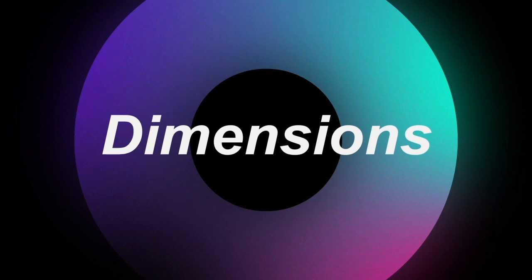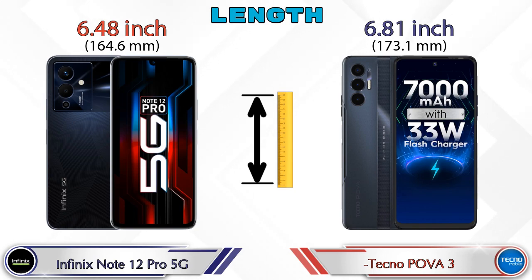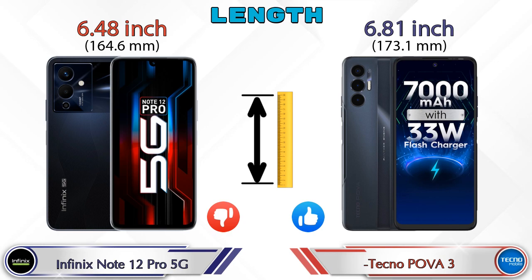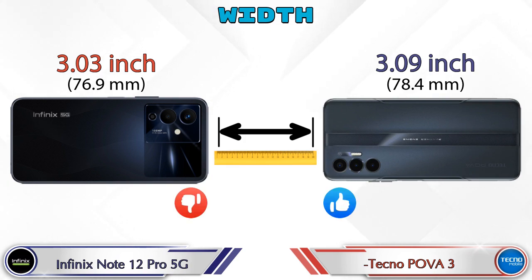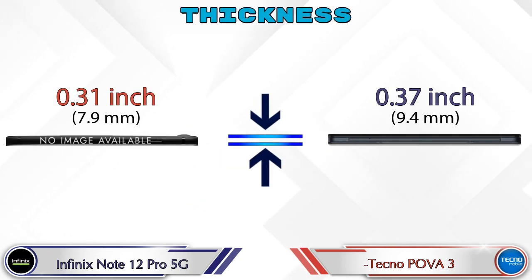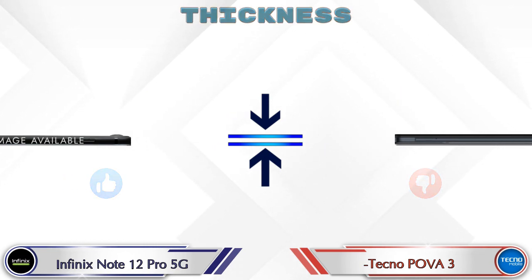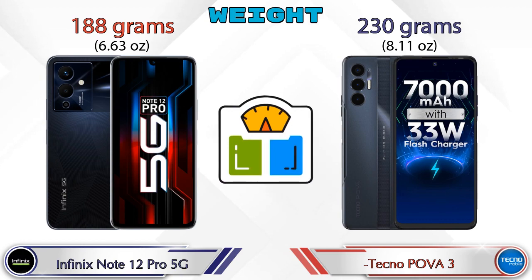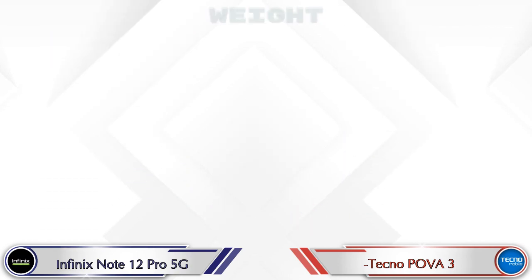Now let's check dimensions. The length of the Note 12 Pro 5G is 6.48 inches and the Power 3 is 6.81 inches. Width: the Note 12 Pro 5G is 3.03 inches and the Power 3 is 3.09 inches, which is bigger than the Note 12 Pro 5G. For weight, the Note 12 Pro 5G is 188 grams and the Power 3 is 230 grams, which is heavier than the Note 12 Pro 5G.